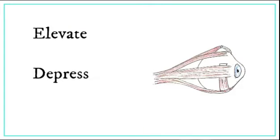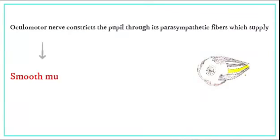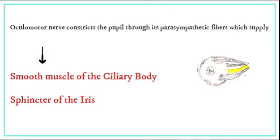These muscles elevate, depress, and adduct the eyeball. Moreover, the oculomotor nerve constricts the pupil through its parasympathetic fibers, which supply the smooth muscle of the ciliary body and the sphincter of the iris.